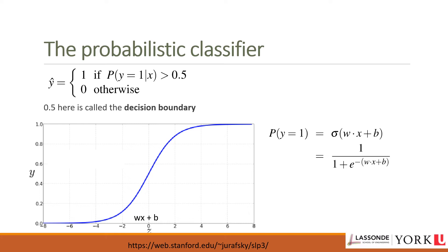For a given test example x, we predict class 1 if p(y=1|x) > 0.5, and class 0 otherwise. The value 0.5 is called the decision boundary. Looking at the sigmoid figure, the boundary crosses at z = 0: when w · x + b > 0 we predict class 1, and when w · x + b < 0 we predict class 0.